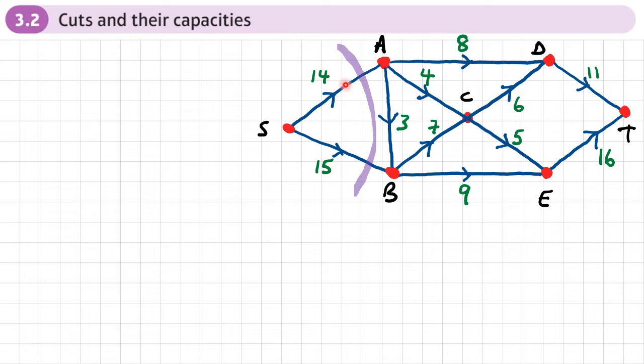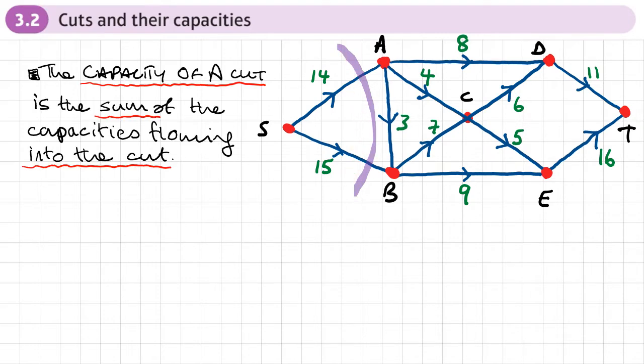Okay, that cuts across edge S, A and S, B. And I can calculate something called the capacity of this cut. Now, the capacity of a cut is the sum of all of the capacities flowing into the cut. So we're not interested in arcs or capacities which are flowing out of it, but just into it. So if I look at this cut here, its capacity would be 14 plus 15. So if I called this cut C1, it would have a capacity of 14 plus 15, which is 29.